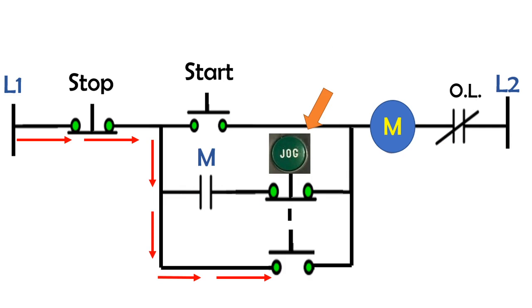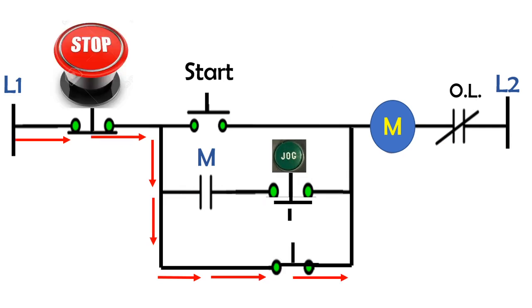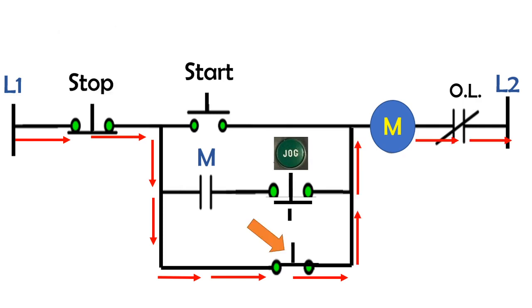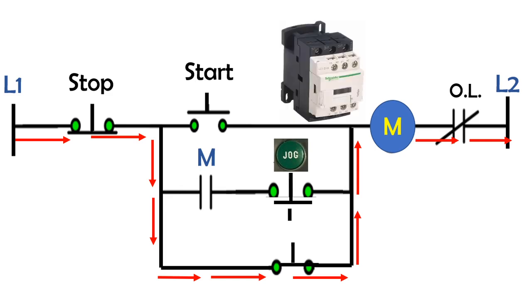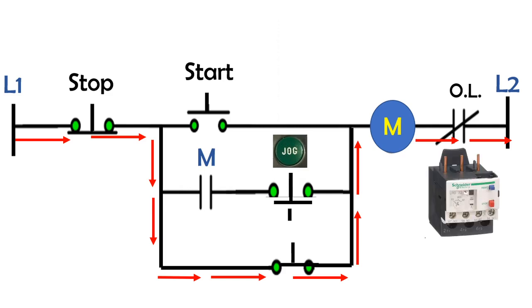When you press the jog pushbutton, current will flow from line one through the stop pushbutton, through the normally open pushbutton that is held closed momentarily, through the magnetic contactor and overload relay, then back to line two.